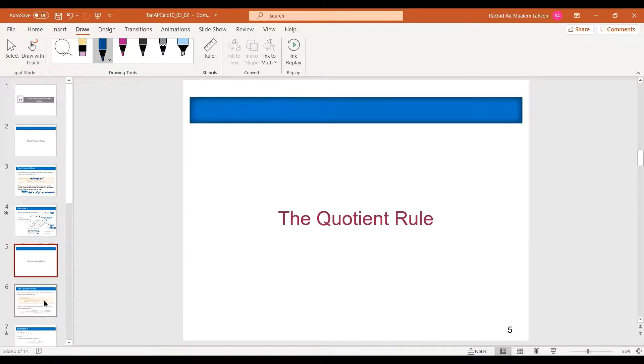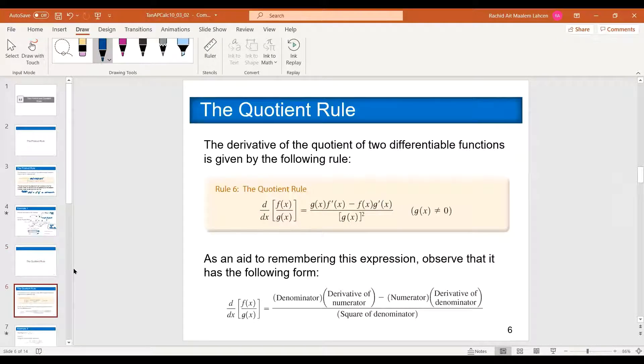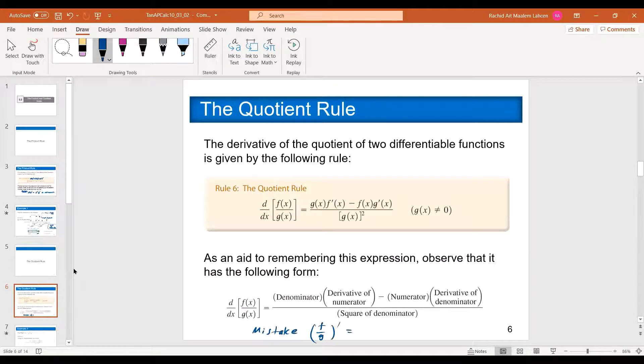The quotient rule, similar to the product rule, the quotient rule does not work. Again, the mistake, you know, to make assumption that if two functions are divided, then you're doing the derivative, it's going to be something like this. So that's not correct.